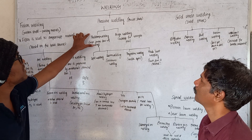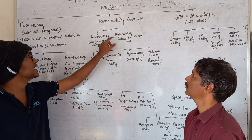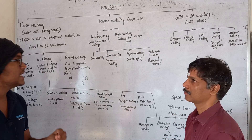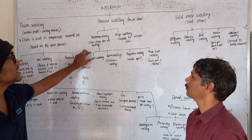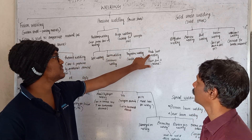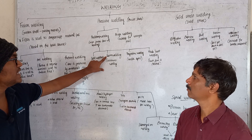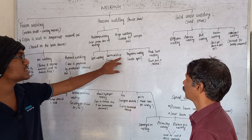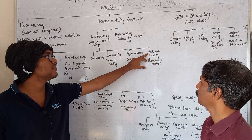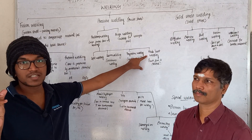For pressure welding, we use resistance welding and forge welding. Under resistance welding, we use spot welding, seam welding, projection welding, and flash butt welding. Spot welding is used for point joining; seam welding is used for continuous welding; projection welding is used for multi-spot welding; and flash butt welding is used for flash-edge welded joints.